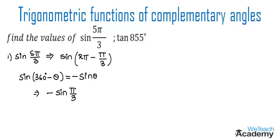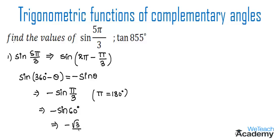The value of sin(π/3) is nothing but sin(60°), since π equals 180°. We already know that sin(60°) = √3/2, so we get the result as −√3/2.